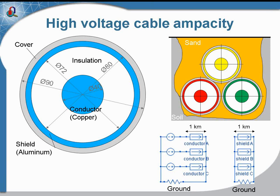Today we will review the case of a three-phase underground cable, and the task will be to calculate the ampacity. The cable is buried underground in a trench filled with sand. When you apply voltage, current flows in the cable, the cable heats up, and the ampacity is limited by the cable temperature. The high-voltage cable consists of the central conductor, the insulation layer, the conducting shield, and the insulation cover.